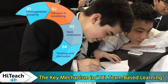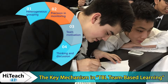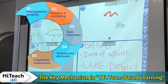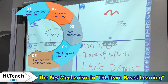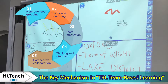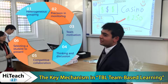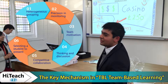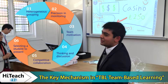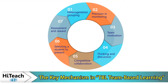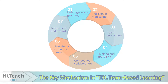Number four: thinking and discussion — first, personal reflection, and then group discussions. Number five: competitive collaboration — teams compare their works to encourage competition and cooperation. Number six: selecting a student to present — randomly pick one student to represent the team and inspire mutual learning. Number seven: assessment and reward — assessment among student peers and teacher evaluations to encourage participation.